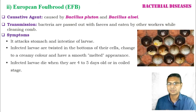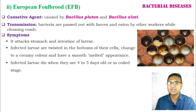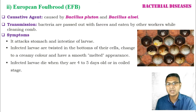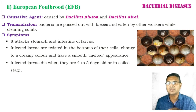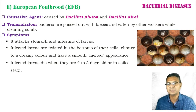The symptoms of European Foulbrood: the bacteria attach to the stomach and intestine of the larval forms. The infected larvae are twisted in the bottoms of their cells, generally located at the bottom in a C shape. As the infection progresses, twisting of the body is observed. The color also changes from creamy to a smooth melted appearance. The infected larvae die when they are four to five days old or in the coiled stage.